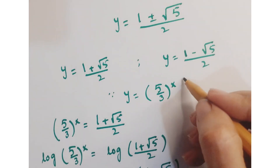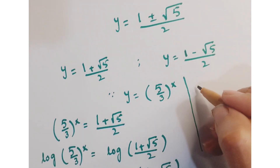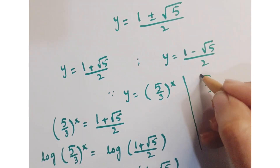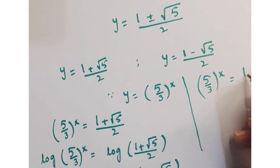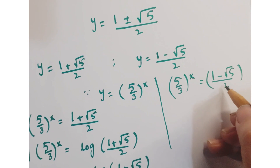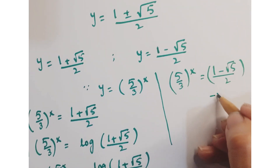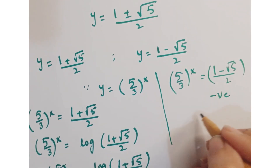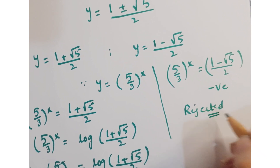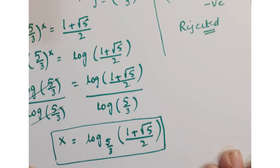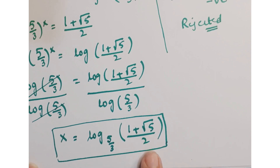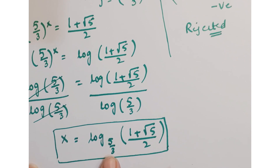In the other solution, if you replace y with (5 upon 3) whole to the power x and take log, this gives a negative value, and the log of a negative number is not possible. So we reject that solution. Therefore, the required answer is log base (5 upon 3) of (1 plus root 5) upon 2.